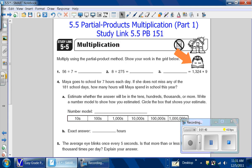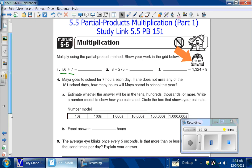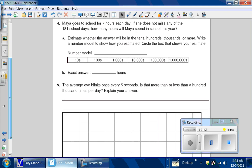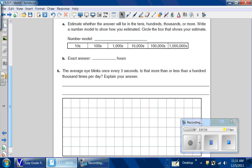Now we'll try solving one of the problems from homework. The first problem is 56 times 7. The first thing that I'm going to want to do is rewrite the problem in my grid paper. 56 times 7.